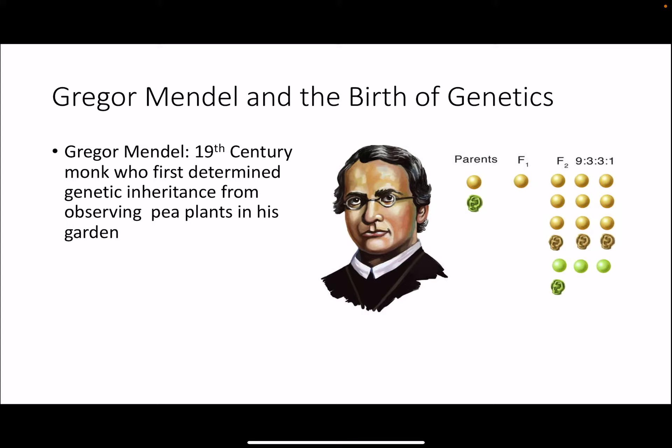Today we're going to discuss basic genetics, which is largely focused on the work of this 19th century Austrian monk named Gregor Mendel. Gregor kept a garden in his monastery and was very interested in breeding pea plants. Through the breeding of his pea plants he noticed a specific phenomenon of trait inheritance in which the parents — a yellow parent and a green wrinkly parent — had many different combinations of offspring.